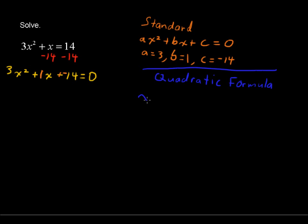And that is x equals negative b plus or minus the square root of b squared minus 4 times a times c, all over 2a. Make sure that you put that fraction bar under the negative b as well.